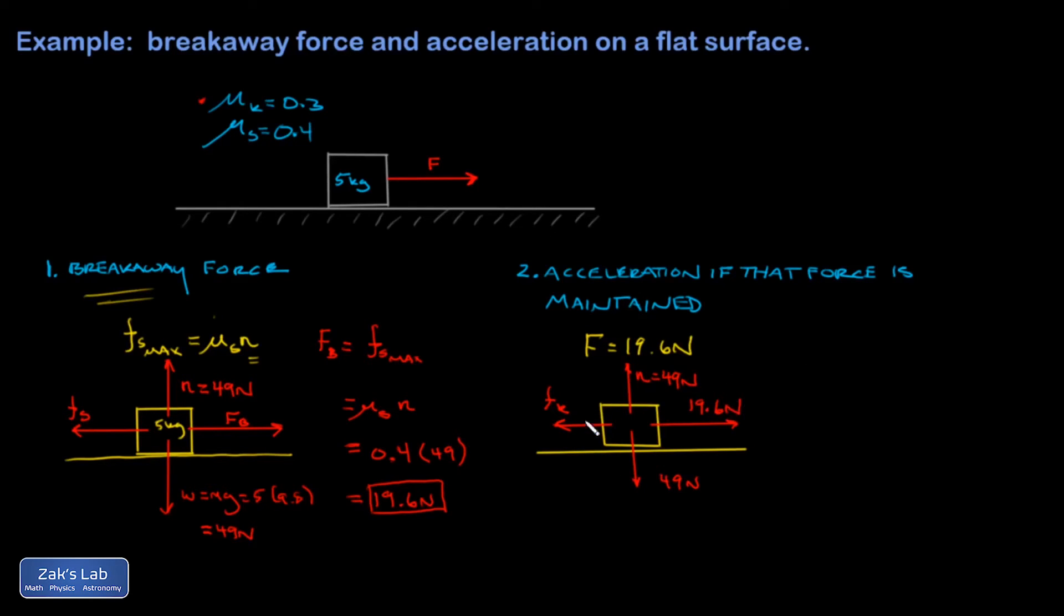So we don't have to worry about the vertical direction. There's no acceleration going on there. In the horizontal direction, I'm going to analyze Newton's second law. So F net equals Ma. And I have a 19.6 newton force pointing to the right. And I have a kinetic friction force pointing to the left. And I'm going to go ahead and write that as mu k times n. And then that's going to be equal to the mass times the acceleration. So 5 kilograms times the acceleration.